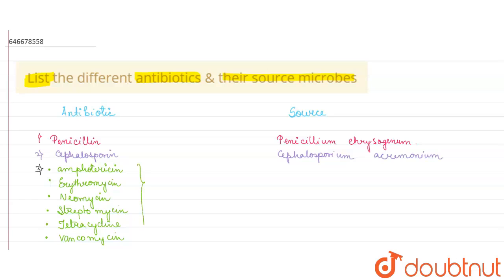All these are produced by different Streptomyces species. Streptomyces nodosus produces Amphotericin, Streptomyces erythraeus produces Erythromycin, Streptomyces fradiae produces Neomycin, Streptomyces griseus produces Streptomycin, and Streptomyces orientalis produces Vancomycin.